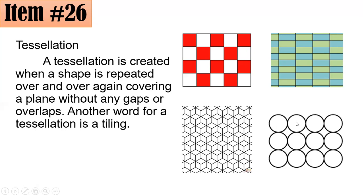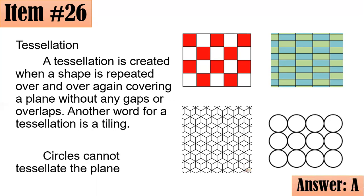But if you place circles here, it could not tile the entire flat surface because if you could see, here are some gaps that are not covered with the circles. Hence, circles do not tessellate, but squares, rectangles, and rhombuses do. The correct answer here is letter A.